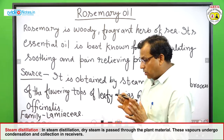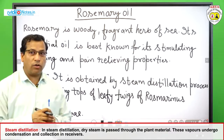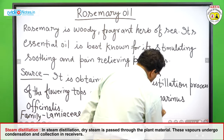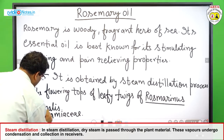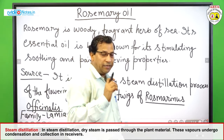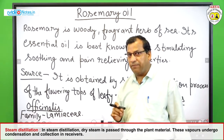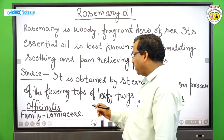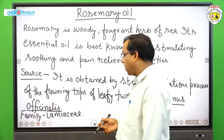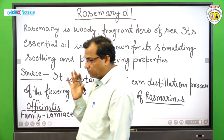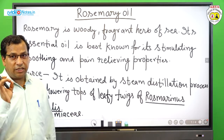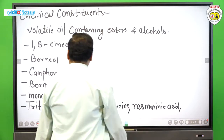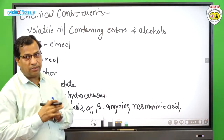Rosemary oil is obtained by the steam distillation process of the flowering tops and stocks of Rosmarinus officinalis. This is the scientific and botanical name of the rosemary herb found near the sea. This herb belongs to the family Lamiaceae. By the steam distillation process, as studied in previous class, we obtain the volatile oil.